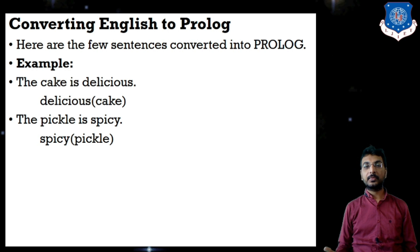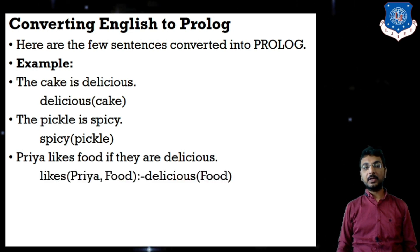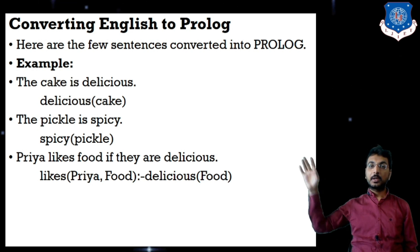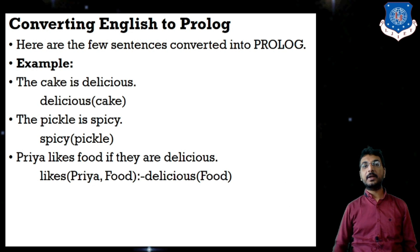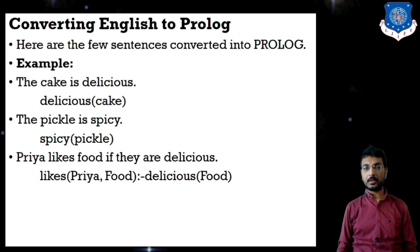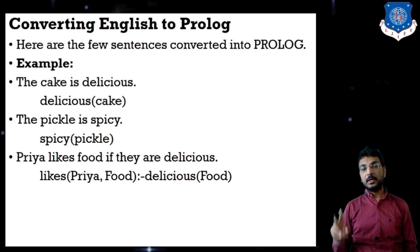Likewise, if we have a verb, the verb will generally be outside the function and the arguments will be inside. The next statement is 'Priya likes food if it is delicious,' meaning Priya likes only delicious food. We convert this as: likes(priya, food) :- delicious(food). The colon-dash symbol behaves like an if statement. In predicate logic this would be: delicious(food) implies likes(priya, food).